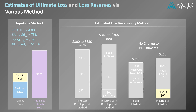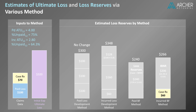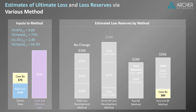This is because the paid loss is not directly considered in either of the BF methods. Let's wrap up our discussion with a scenario where case reserves are hypothetically increased. In this scenario, the loss reserve estimates on the right-hand side have been returned to their original values. Notice that paid loss is once again $100. We're going to make a hypothetical increase in case reserves from $60 to $70. After this change, estimated loss reserves via the paid loss development method would be unaffected, since case reserves are not used anywhere in this method. Estimated loss reserves via the incurred loss development method would increase from $348 to $376, about an 8% increase.